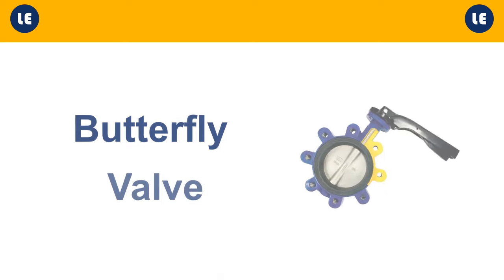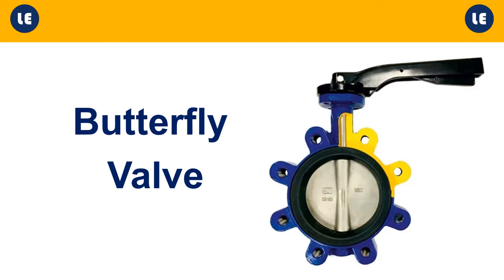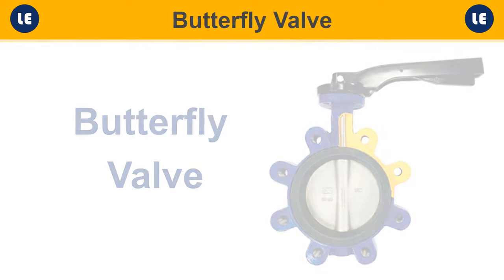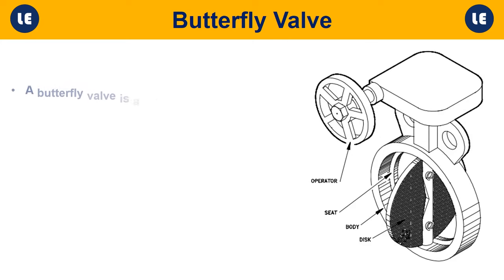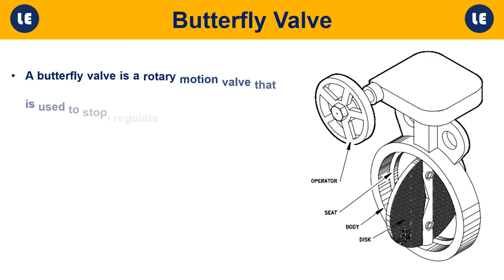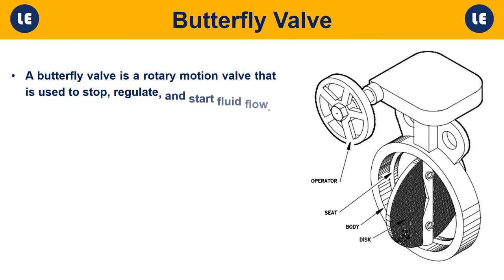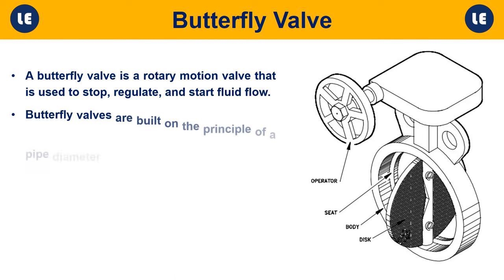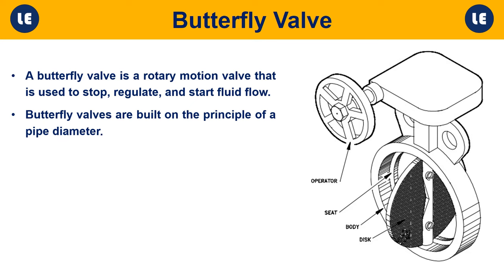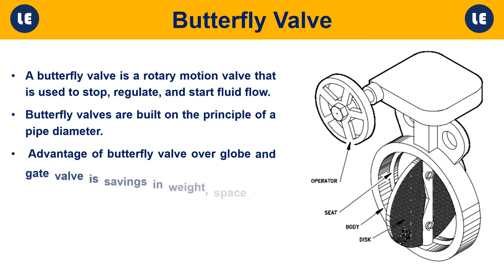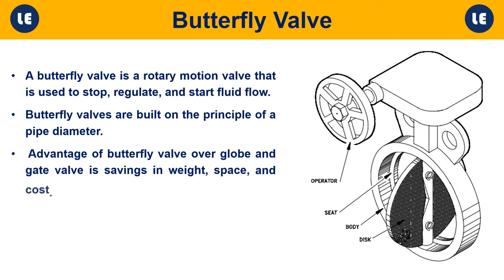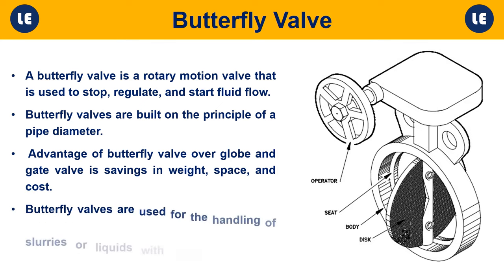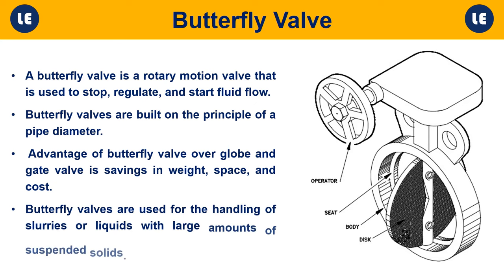Butterfly valve: A butterfly valve is a rotary motion valve used to stop, regulate, and start fluid flow. Butterfly valves are built on the principle of a pipe diameter. An advantage over globe and gate valves is savings in weight, space, and cost. Butterfly valves are used for handling slurries or liquids with large amounts of suspended solids.